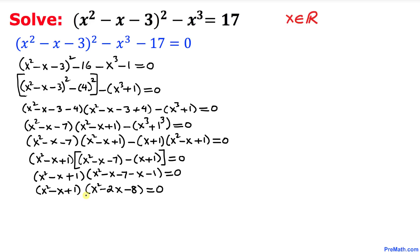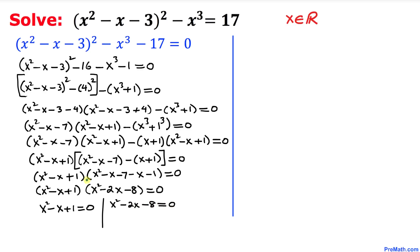Now let's go ahead and split these two factors. We can write x squared minus x plus 1 equal to 0, and the other factor is x squared minus 2x minus 8 equal to 0.